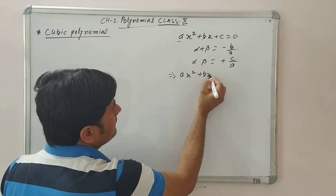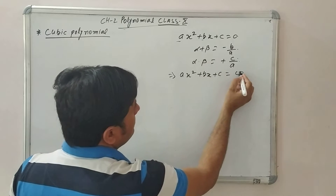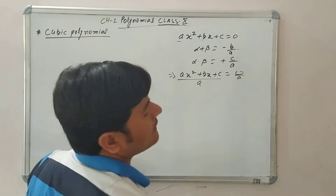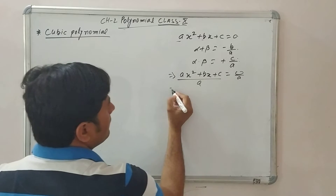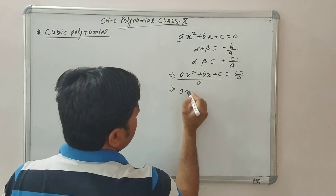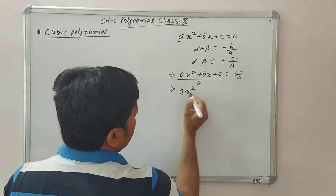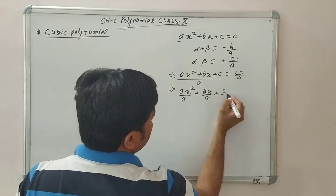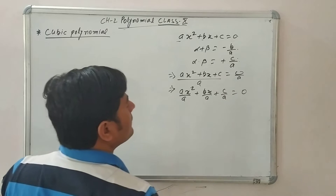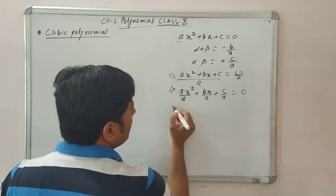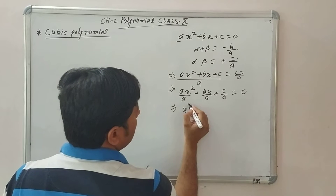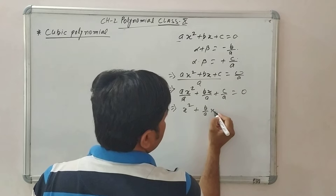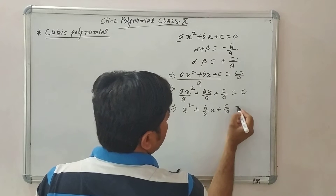Here is a trick to remember: for ax² + bx + c = 0, divide both sides by a. We get x² + (b/a)x + c/a = 0. This gives us x² + (b/a)x + c/a directly, so we can read off the coefficients easily.